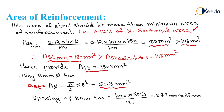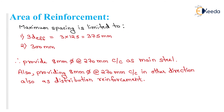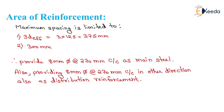Spacing of 8 mm bar equals 1000 into small a_ST upon capital A_ST. Putting values: 1000 into 50.3 divided by 180, we get 279 mm, approximately 270 mm. Maximum spacing is limited to 3D equals 3 into 125 equals 375 mm, or 300 mm. Provide 8 mm dia bar at 270 mm centre to centre as main steel.